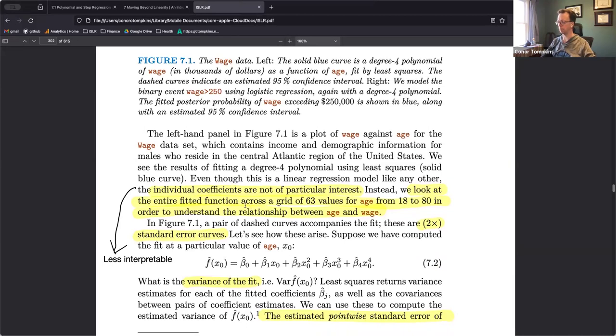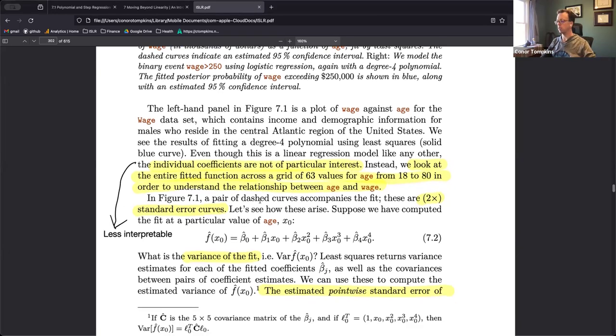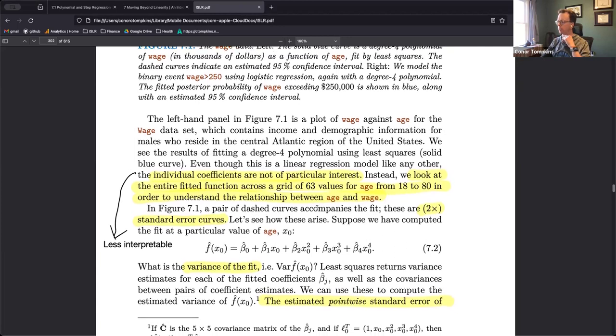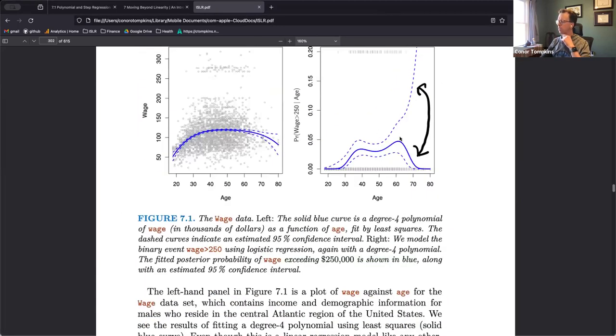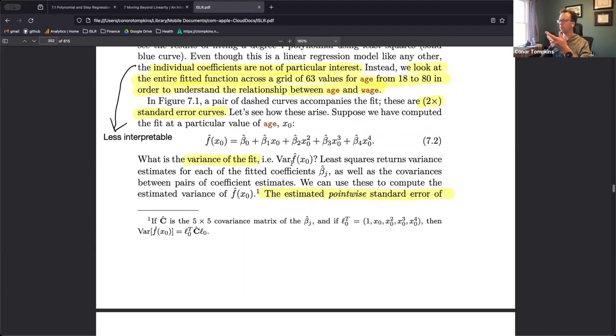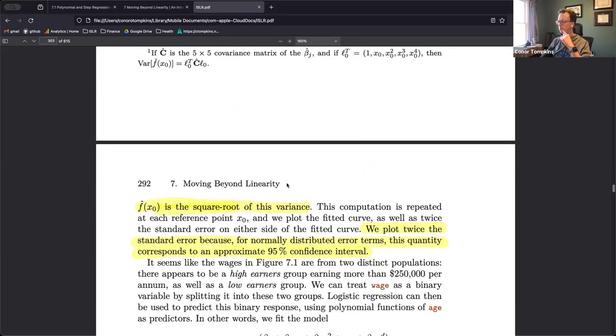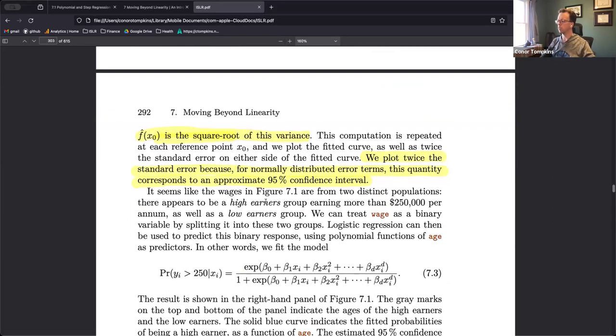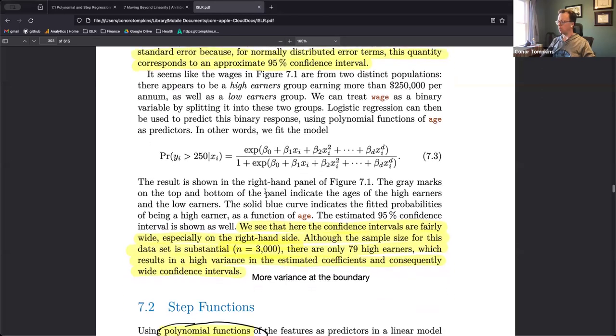Here they sort of simulate the entire function against the entire grid of the values to try and estimate or look at what the impact is instead of looking at coefficients. So they show the two times standard error curves, that's the dotted line upper and lower. So that's how you look at the variance of the fit. That's the 95% interval if you do the two times, approximately.